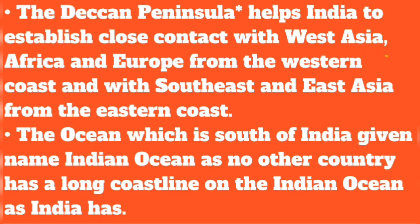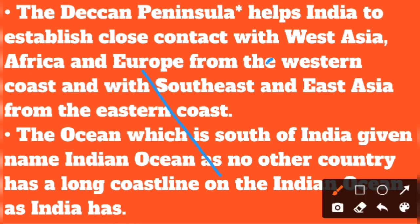The Deccan peninsula helps India establish close contact with West Asia, Africa, and Europe from the western coast, and with South-East Asia and East Asia from the eastern coast. Through the western coast, India has connections to West Asia, Africa, and Europe.